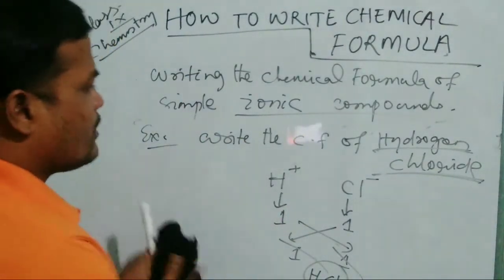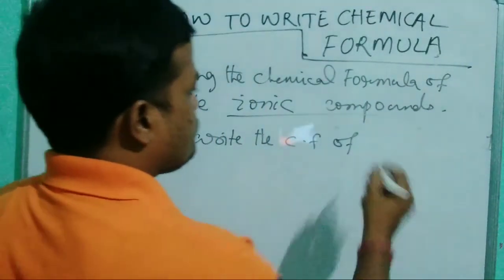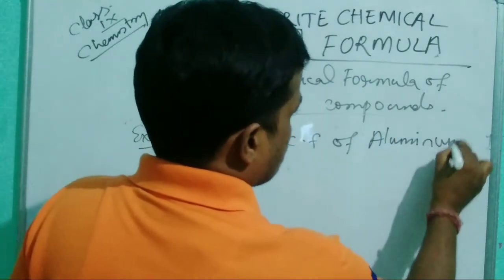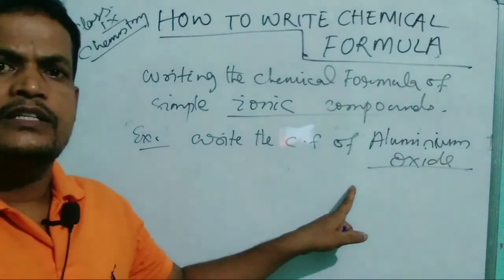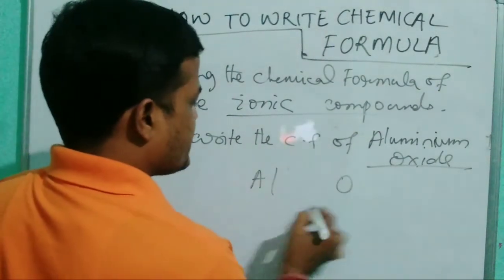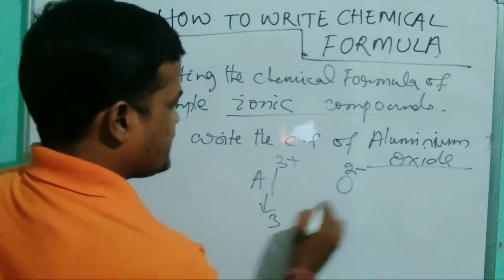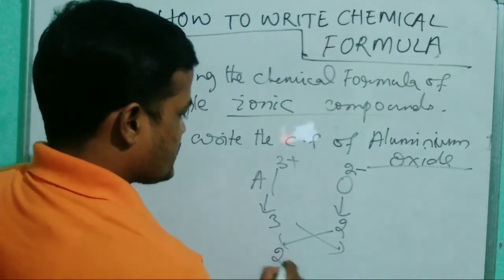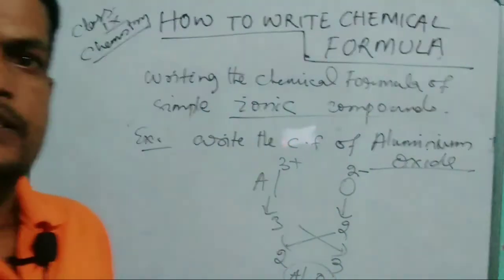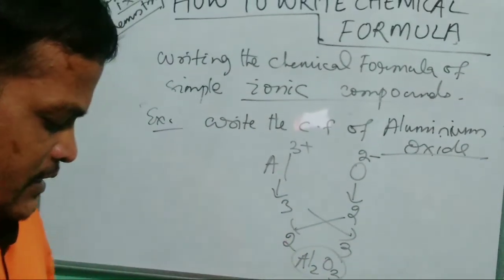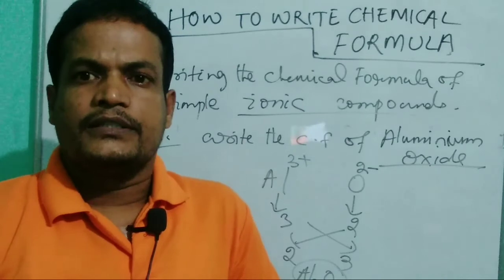Let us write the chemical formula of aluminium oxide. In aluminium oxide, aluminium is Al3+ and oxygen is O2−. Write valency 3 for aluminium and 2 for oxygen. Cross over: aluminium gets subscript 2 and oxygen gets subscript 3. So the formula is Al2O3 — this is the chemical formula of aluminium oxide. That is all about chemical formulas for today's class. In the next class we will learn more. Thanks, have a nice day.